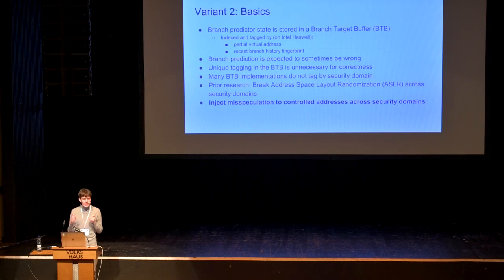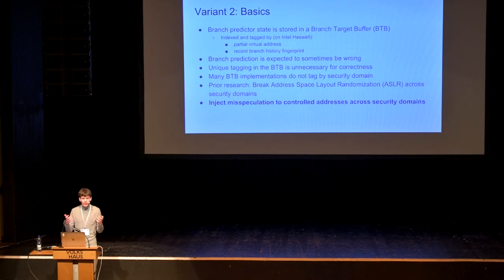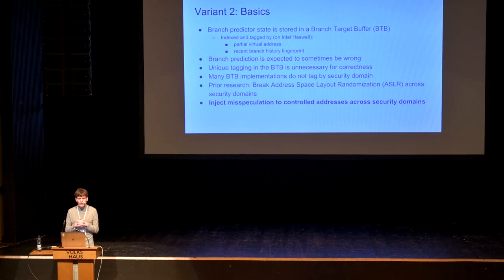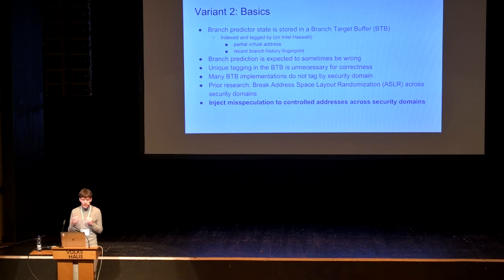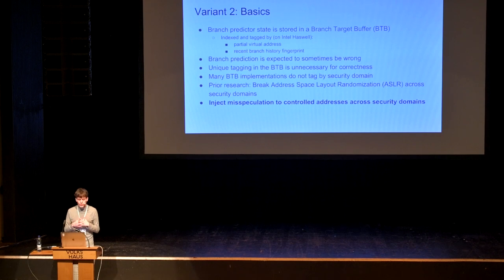Branch prediction is expected to sometimes be wrong, which means — unlike a data cache that must always return correct information — a branch target buffer can be designed to sometimes return invalid data. The branch target buffer is therefore not always uniquely tagged, and many implementations such as the Intel Haswell processor do not tag by security domain, such as whether you're in kernel or user space, or inside or outside a VM.